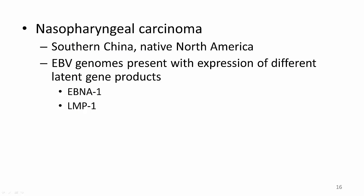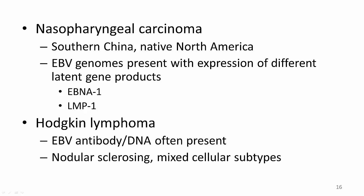Another EBV-associated tumor type is nasopharyngeal carcinoma, which is endemic in persons from southern China and certain native North Americans. EBV viral genomes are present in tissues from all patients with non-keratinizing nasopharyngeal carcinoma. Tissues show expression of many different latent gene products, including EBNA1 and occasionally LMP1 in 40 to 70 percent of cases. Patients with Hodgkin's disease often have elevated levels of antibodies to EBV antigens before or at the time of presentation of lymphoma, long presumed to reflect evolving impairment in cellular immunity.